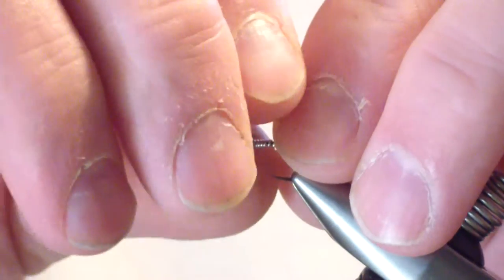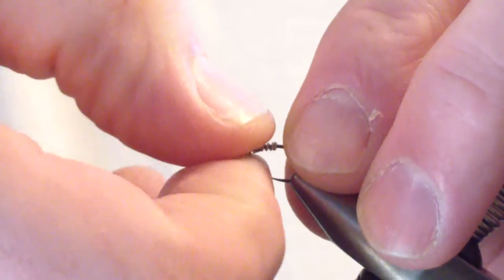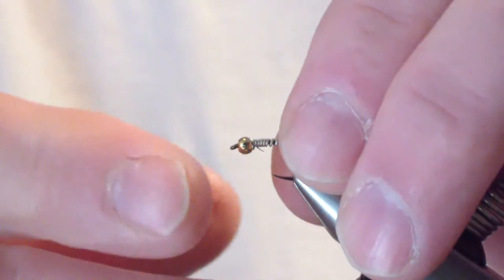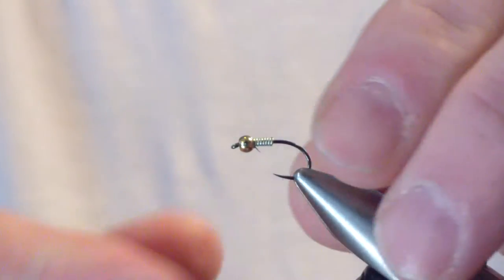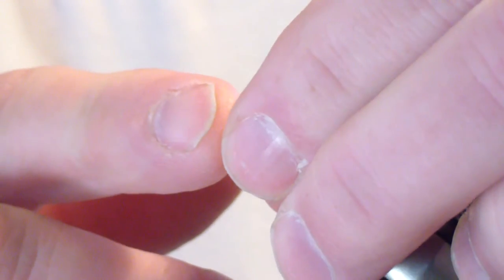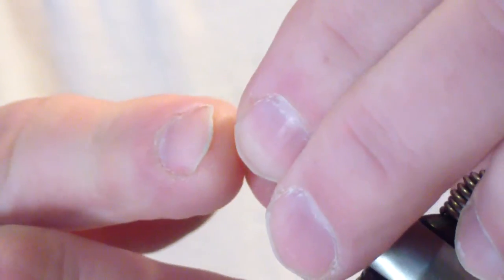Traditionally, I guess it would be a copper bead, but I seem to do better with gold. And I do use tungsten. I want the extra weight. We're going to seat that wire up against the bead nice and tight.